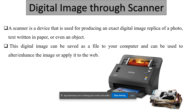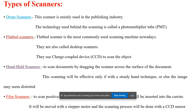Now we have learned what a scanner is. Next, how many types of scanners are there? We have mainly four types of scanners: drum scanners, flatbed scanners, handheld scanners, and film scanners.